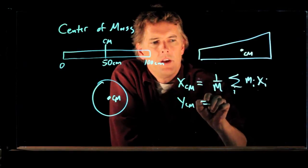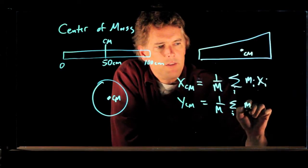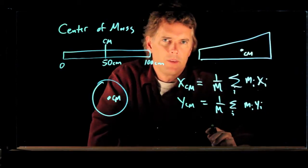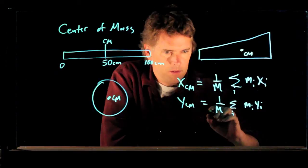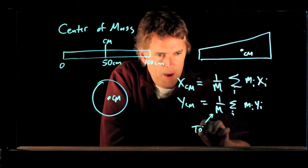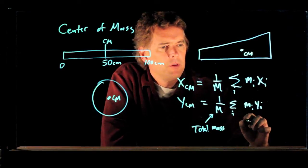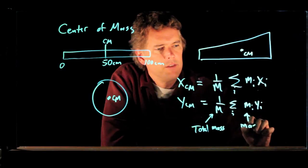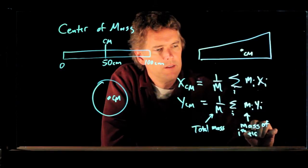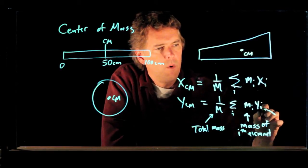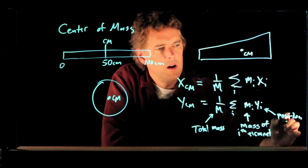If you're in two dimensions, then you can do the y center of mass as well. And that is just m sub i times y sub i over all the particles. Now what does all this mean? m is the total mass of the object. m sub i is the mass of the i-th element. y sub i is the position of that element.